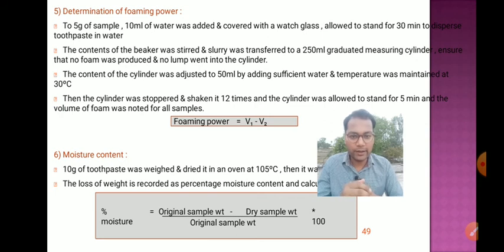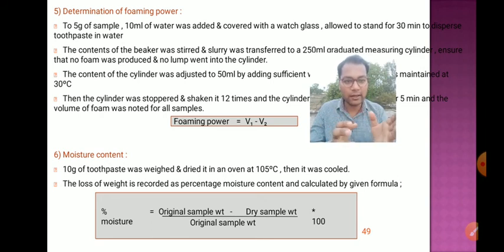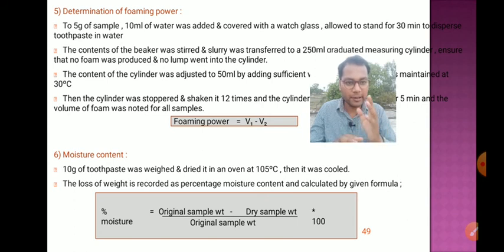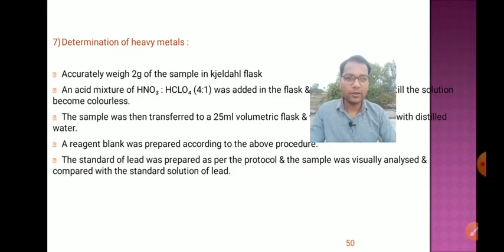Another evaluation test is moisture content. 10 grams of toothpaste is weighed and dried in an oven at 105°C, then cooled. The loss of weight is recorded, and percentage moisture content is calculated by the formula: percentage moisture = [(original sample weight − dry sample weight) / original sample weight] × 100.